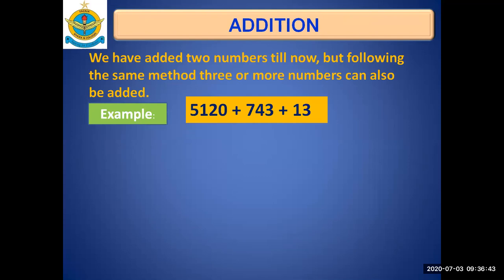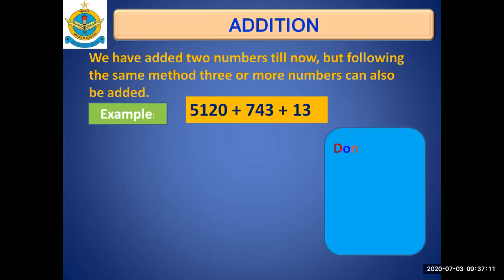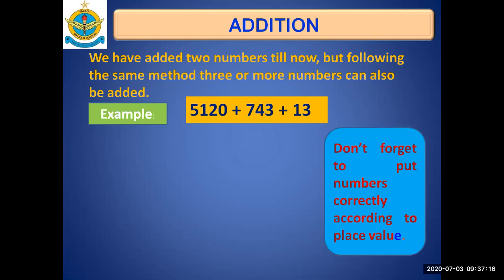We have added two numbers so far, but following the same method we can add three or more numbers as well. For example, we have three numbers: 5120, 743, and 13. We need to add them — the plus sign tells us that. First, write the place values and then write the numbers correctly according to place values.